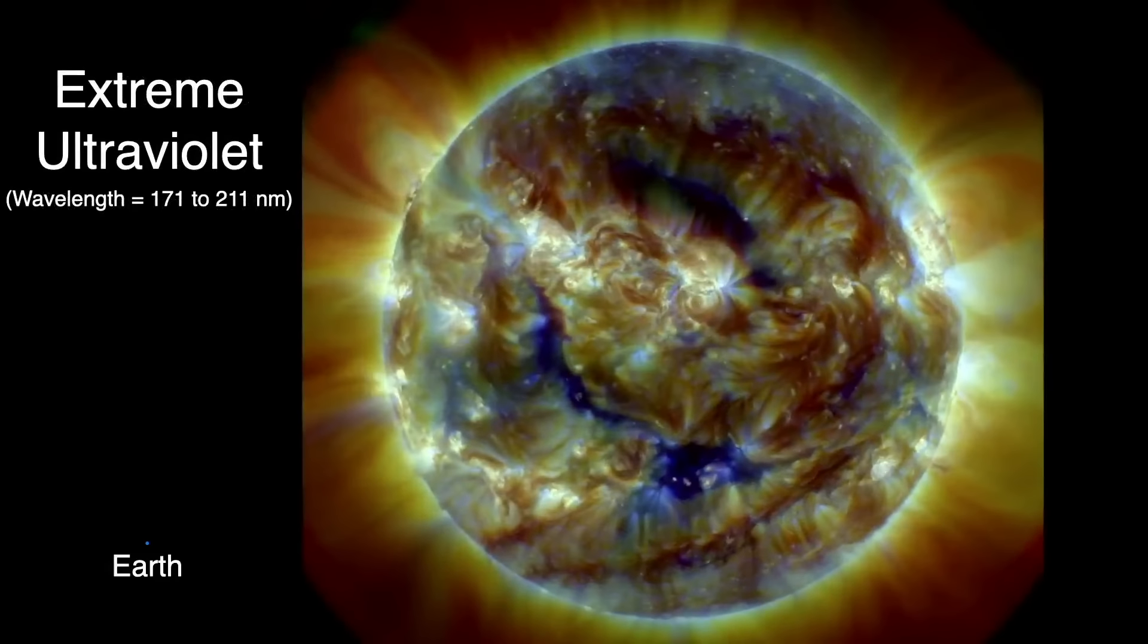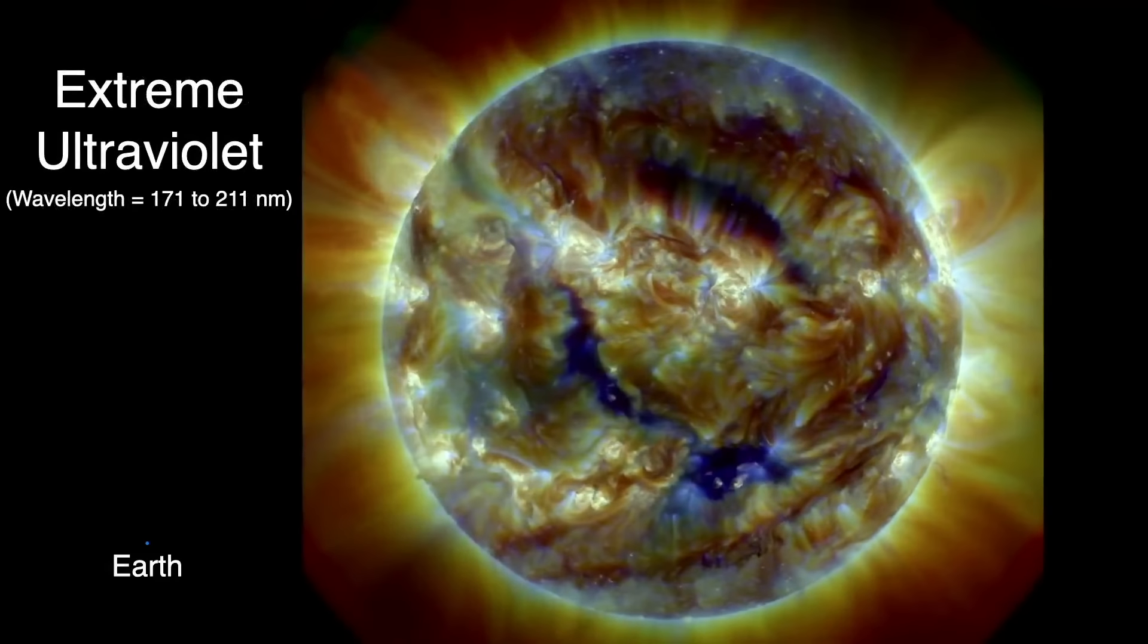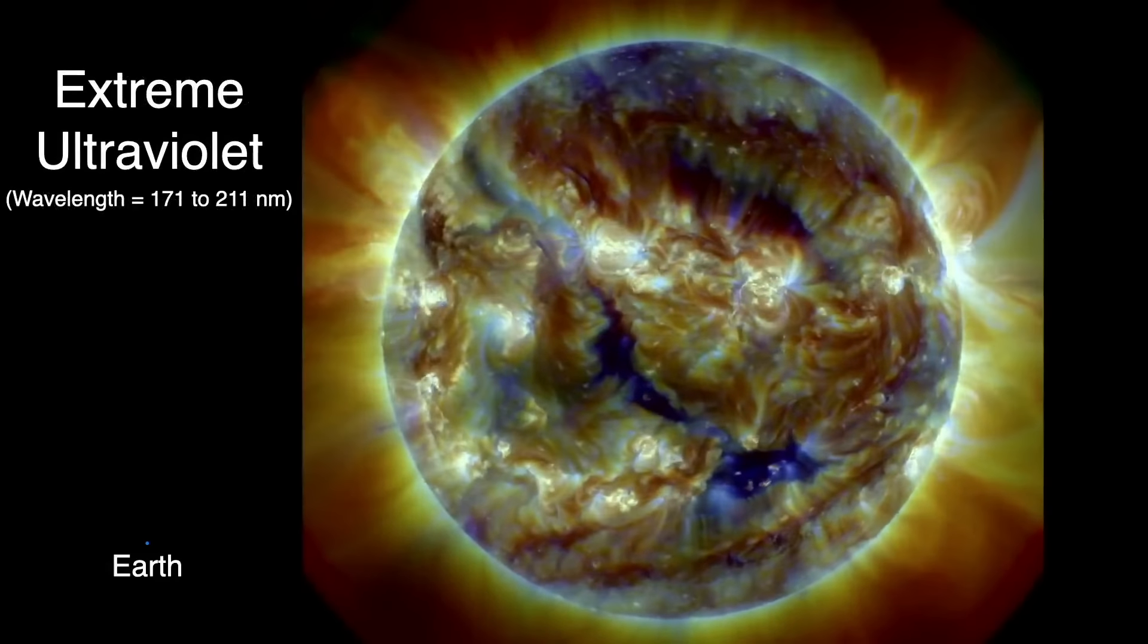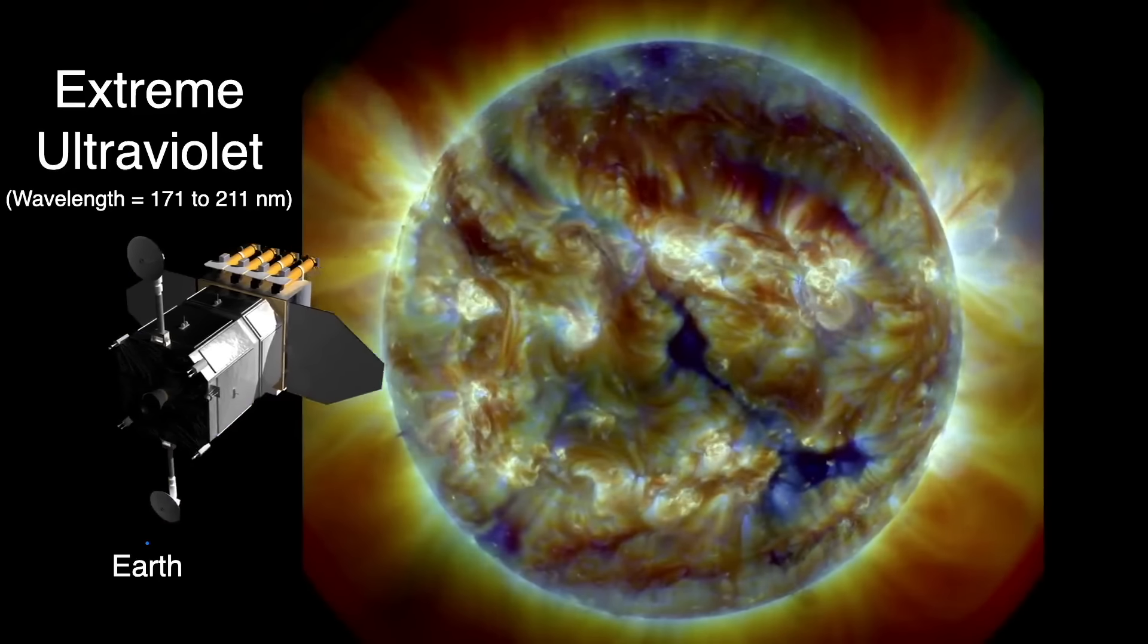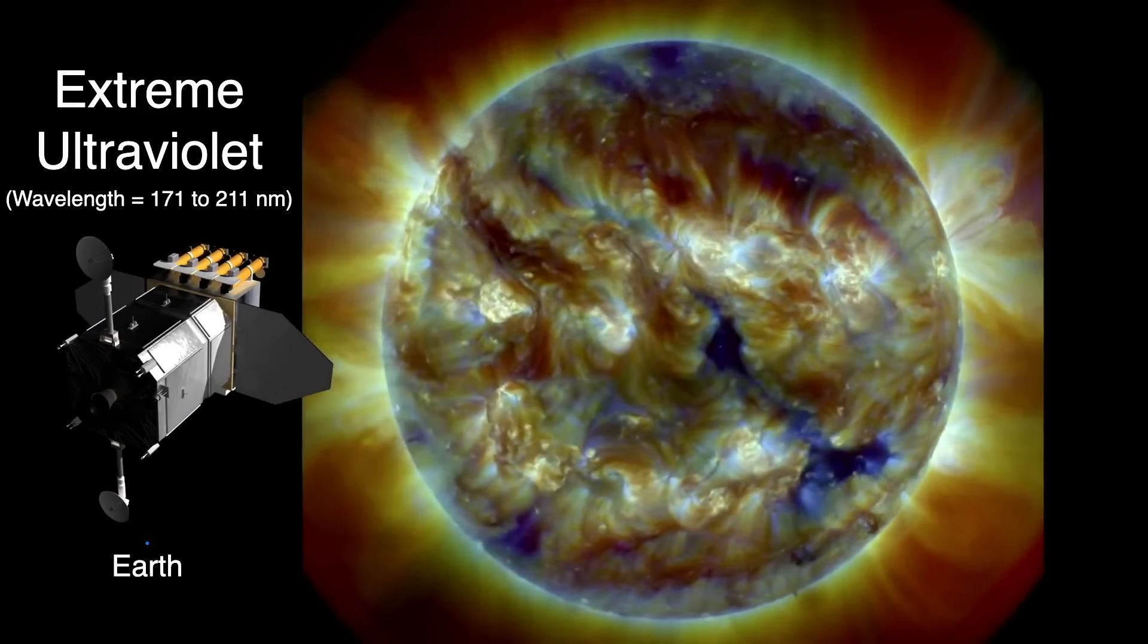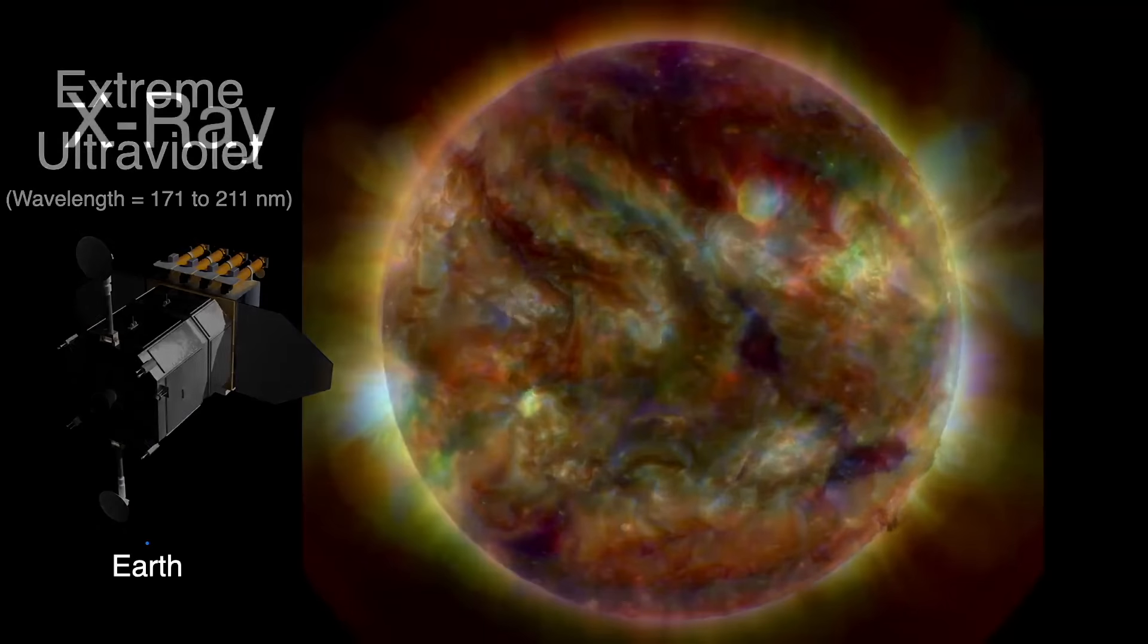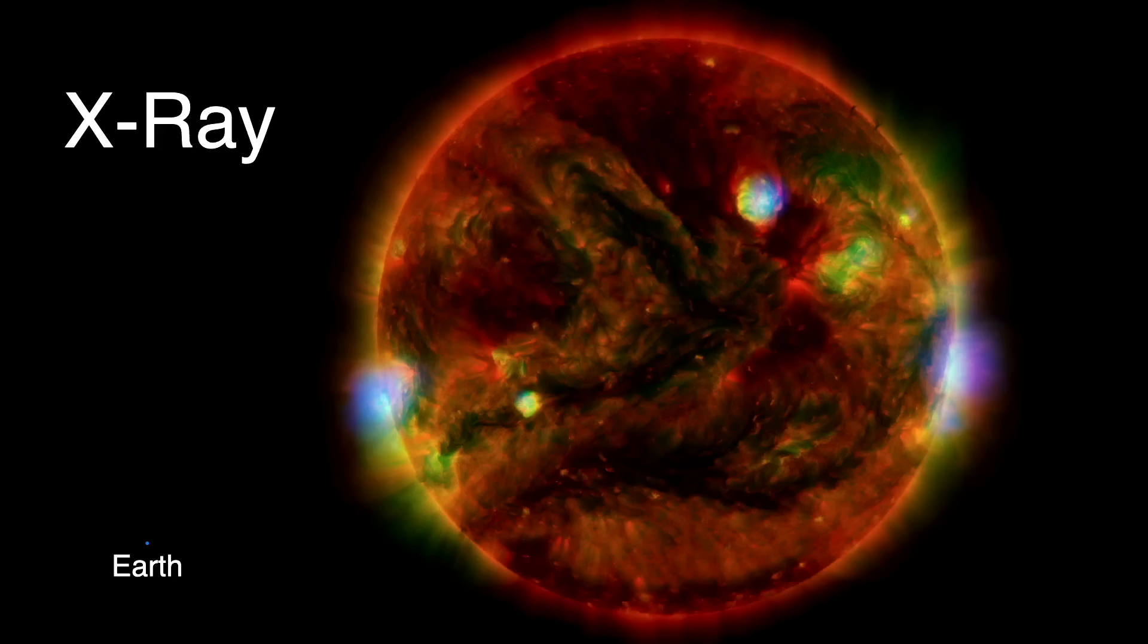With spacecraft above the atmosphere, you can observe the sun in extreme ultraviolet. This view was taken from the Solar Dynamics Observatory, or SDO, in orbit around the Earth. This x-ray view of the sun is a combination of three different satellite views. Each type of light lets us explore a different aspect of our star.